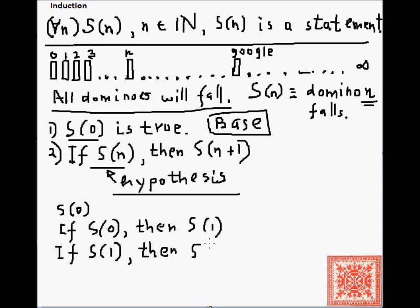And then, if domino number 2 falls, s(2) is true, then s(3) is true, domino number 3 falls, and so forth, infinitely. And so, by using this reasoning, I will be able to show that for all n, s(n) is true.